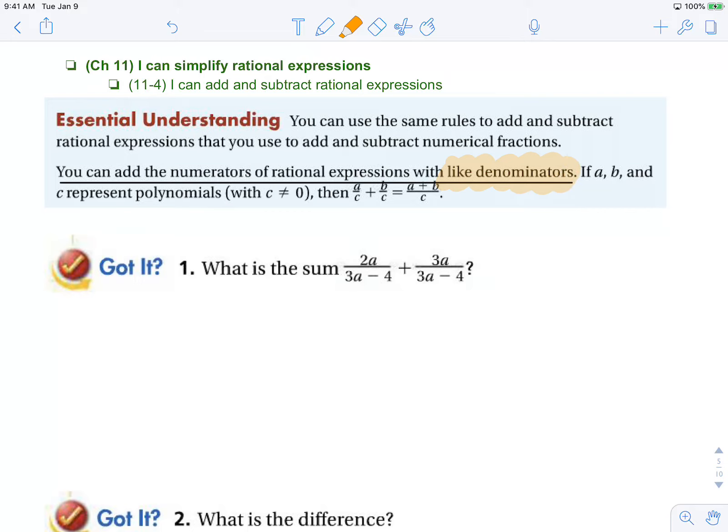If I look at this one, what is the sum? I can see that we already have a common denominator of 3a minus 4, so that's nice. We know our new denominator is going to be 3a minus 4. They're both the same, and our numerators now we can combine them: 2a plus 3a is 5a over 3a minus 4. We're not asking for excluded values, so this is our final answer.